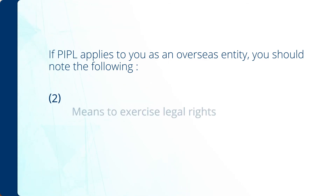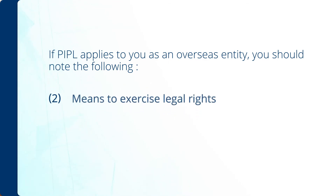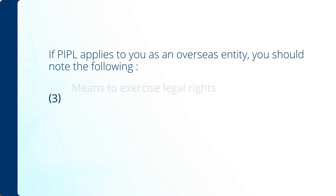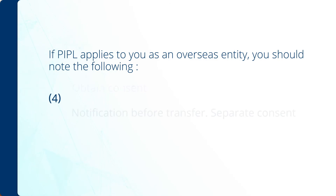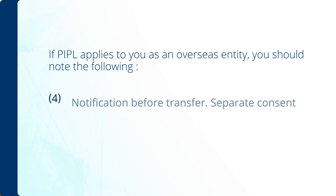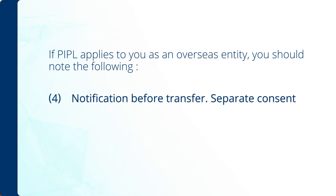Second, you need to let them know how they can exercise the rights under PIPL. And third, you need their consent to process the personal information, unless it is exempted on specific grounds under the law, like emergency use. Fourth, if you intend to transfer their personal information to another entity, you need to inform them specifically. Separate and prior consent is necessary.